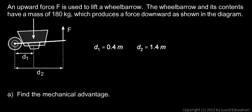In this example, we're told that an upward force F is used to lift a wheelbarrow. The ground is right down here, and it pivots at the wheel. The wheelbarrow and its contents have a mass of 180 kilograms, which produce a downward force as shown.